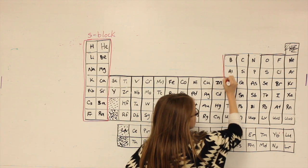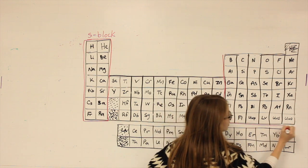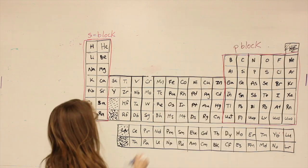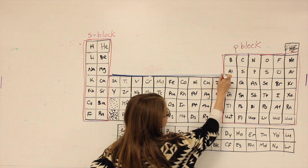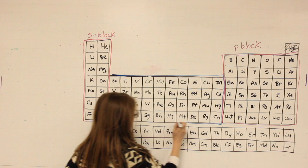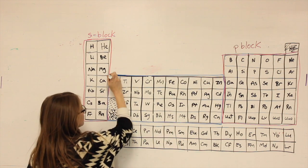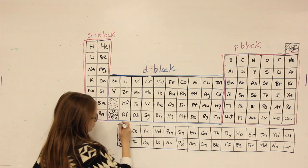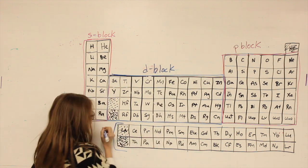Starting at boron, going down and over, this is now a nice block that we'll call the P-block. So this middle section here we will call the D-block. And these two rows at the bottom, they make up our F-block.